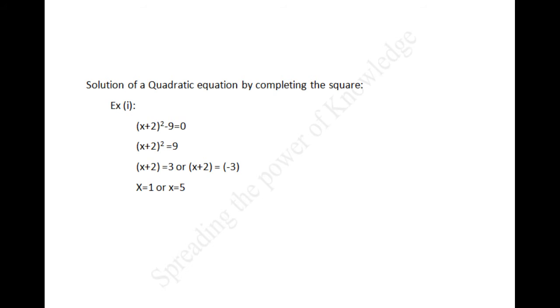Solution of a quadratic equation by completing the square. Consider the quadratic equation x plus 2, the whole square, minus 9 equal to 0. Therefore, x plus 2 the whole square equal to 9, so x plus 2 equal to 3 or x plus 2 equal to minus 3. Therefore, the value of x equals 1 or x equals minus 5.